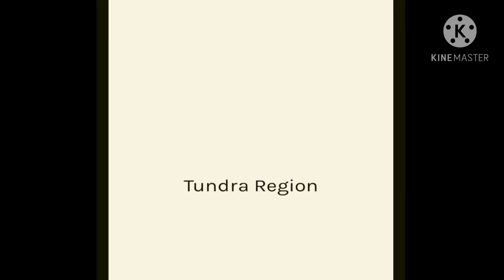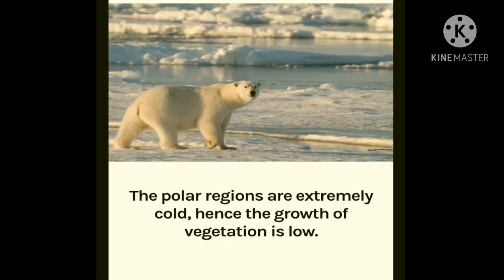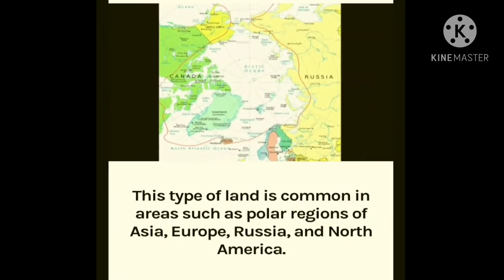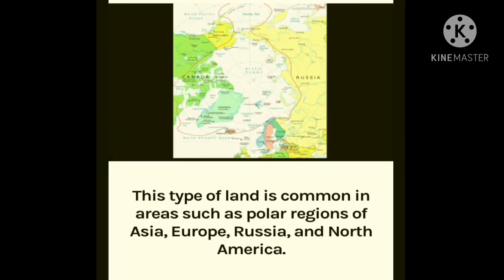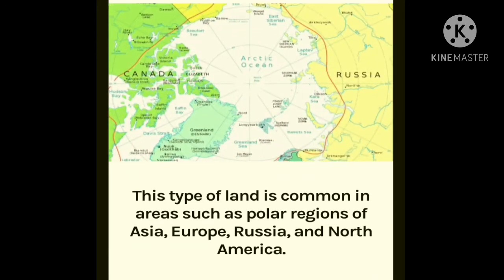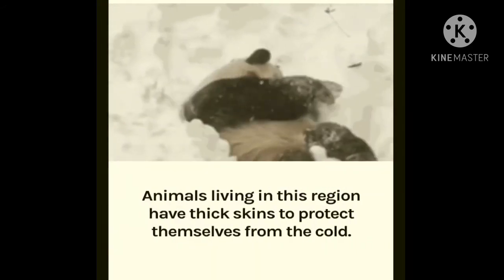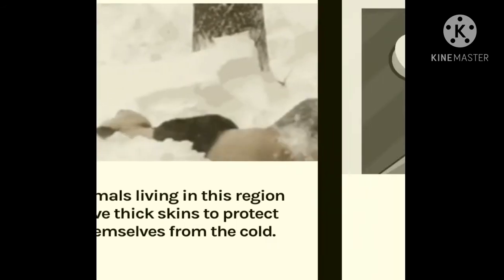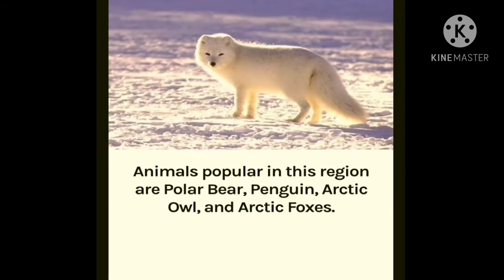The next type is the tundra region. The polar regions are extremely cold, hence the growth of vegetation is very low. The only vegetation found here are mosses, lichens and very small shrubs. This type of land is common in the polar regions of Asia, Europe, Russia and North America. Animals living in this region have thick skin to protect themselves from the cold. Animals popular in this region are polar bear, penguin, arctic owl and arctic foxes.